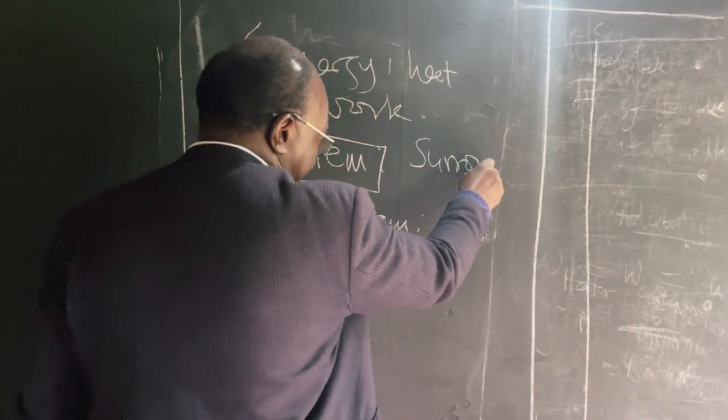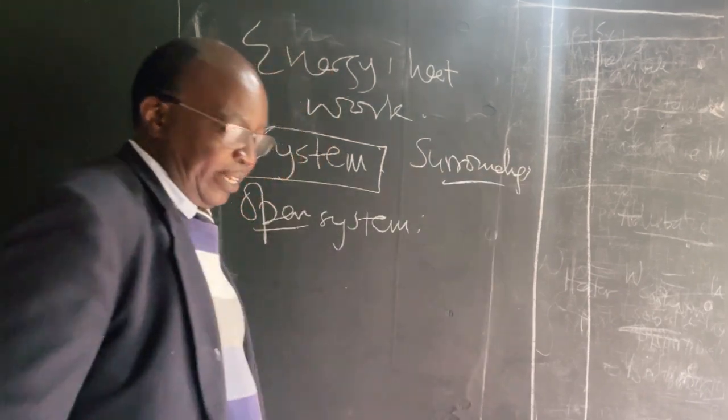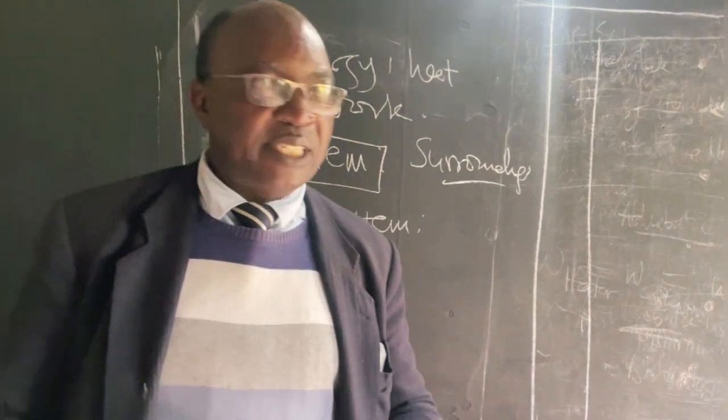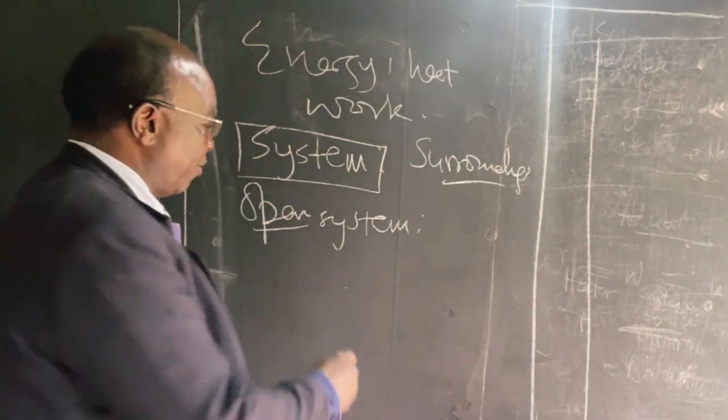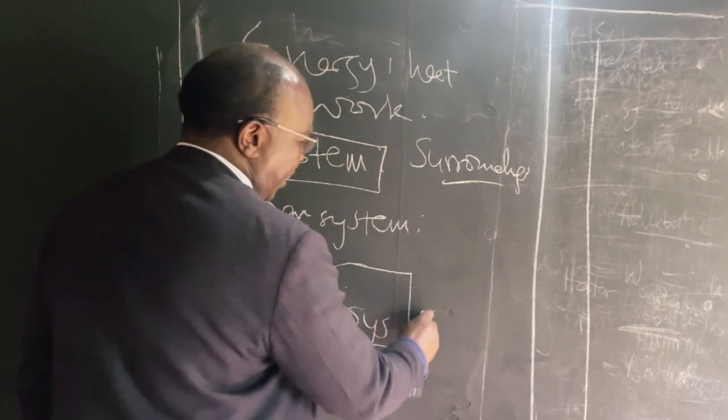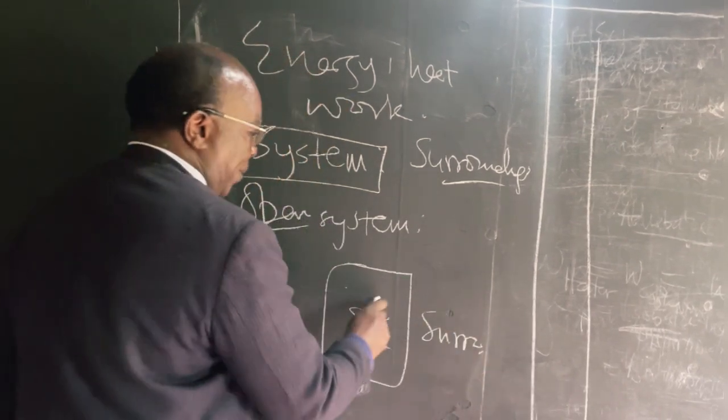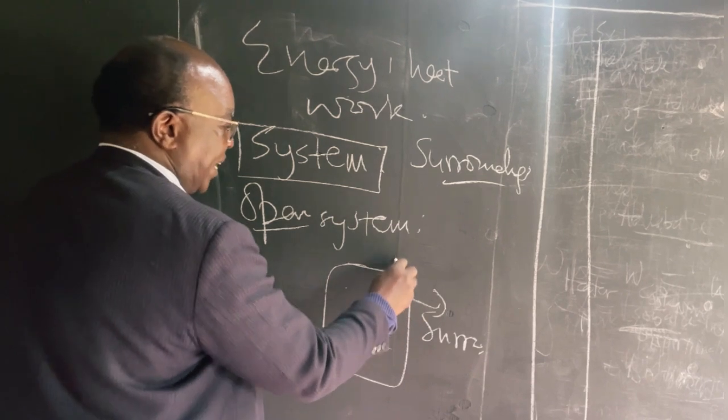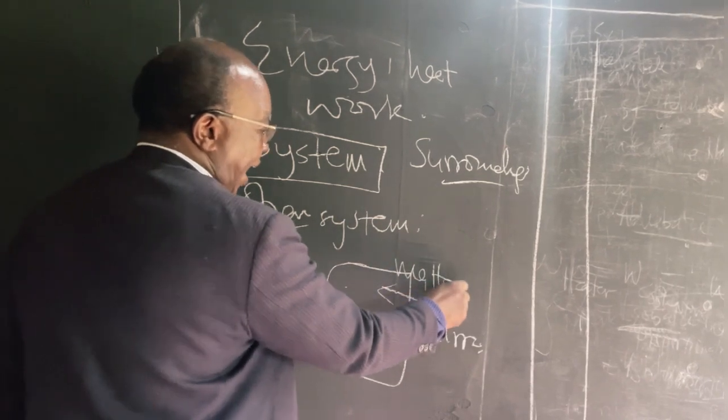Surroundings, on the other hand, is where you make your recordings, or is in the vicinity of your system. So if you have your system, let's call it system, and you have your surroundings. Open system, you can transform matter between the system and your surroundings.